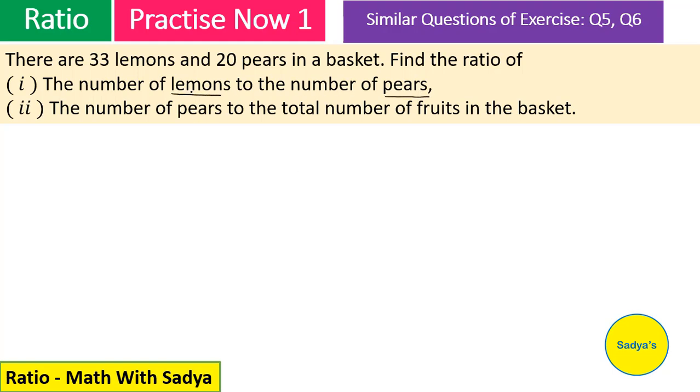Look at the statement of the question. We have to find the number of lemons to the number of pears. It means we will write the number of lemons followed by number of pears and they will be separated by a colon sign. So, the ratio of the number of lemons to the number of pears is 33 : 20. 33 and 20 kisi table mein nahin aate except for 1. So, this is our answer.